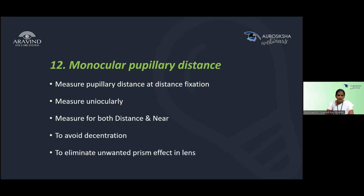Step 12 is monocular pupillary distance. Measure monocular PD for both distance and near fixation, clearly for each eye individually. This helps avoid decentration in lenses and eliminates unwanted prismatic effects.